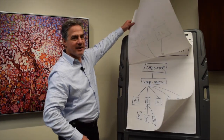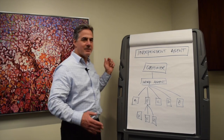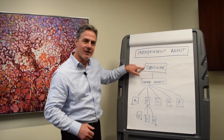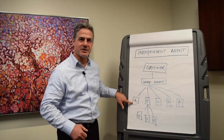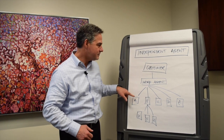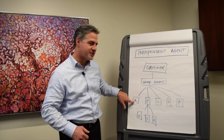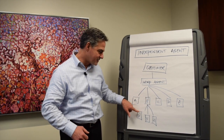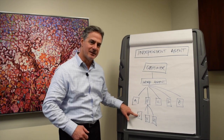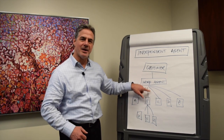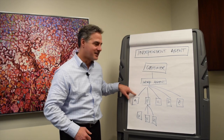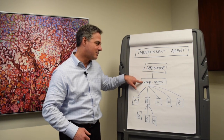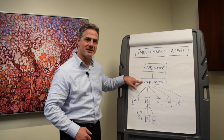An independent agent is what we do in our business — we're in between our customer and the insurance companies that we represent. Independent agents represent different insurance companies, and some of the companies we deal with represent other insurance companies as well. Our job is to receive information from all these different options and bring them to the customer, so the customer deals with just one independent agent that has lots of different options.